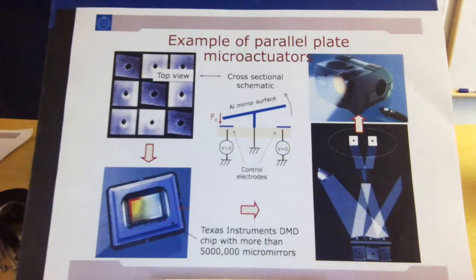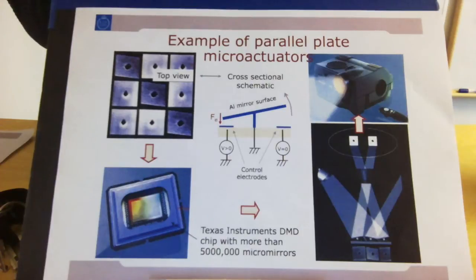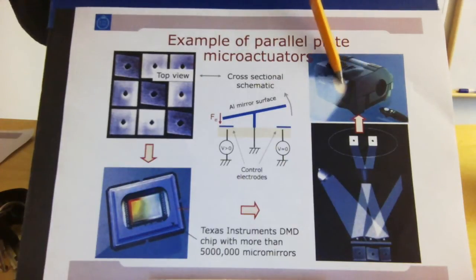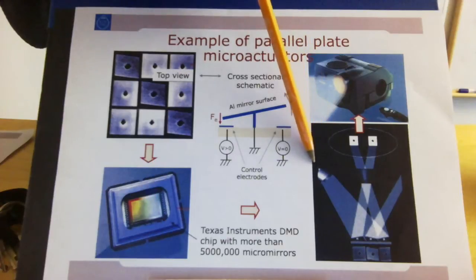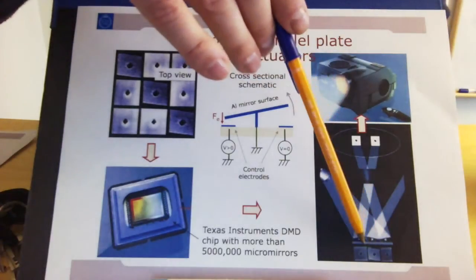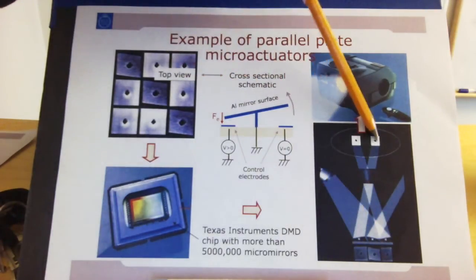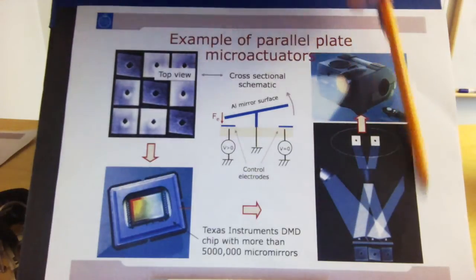Let's have a look at an example of a parallel plate actuator in an application. Here we see a digital light projector — typically the type of projector you have in a lecture hall. Basically, one of these projectors contains a projection lamp that shines light on a micromirror plate, and the micromirrors on the plate either reflect the light through a lens and onto the screen, or into a black wall.